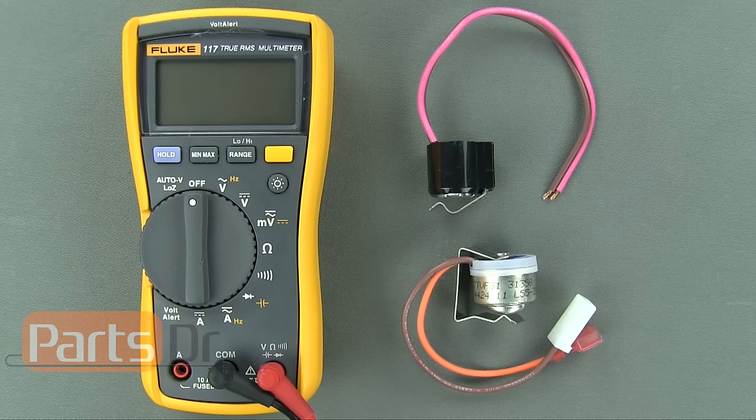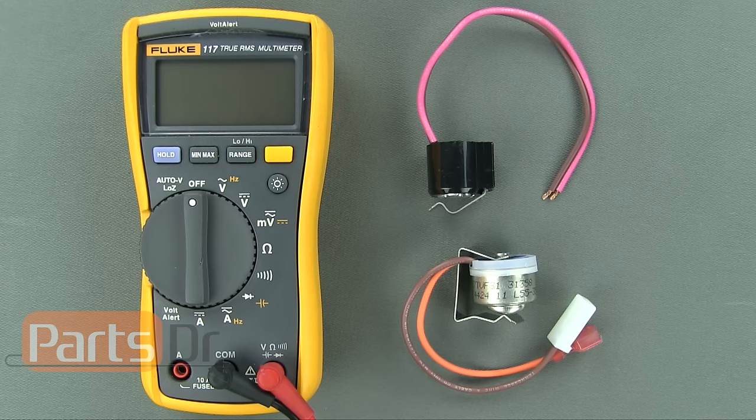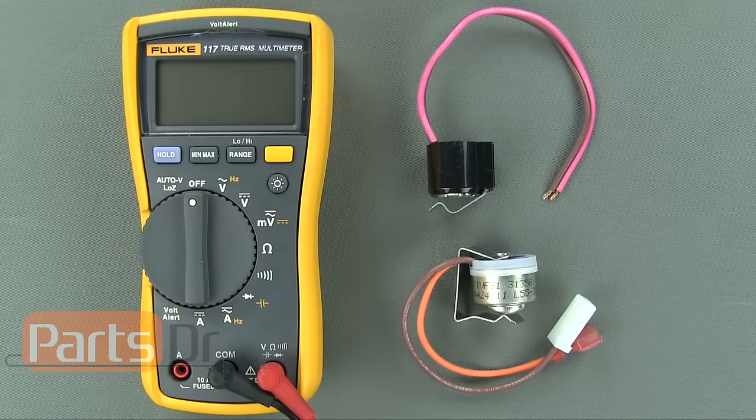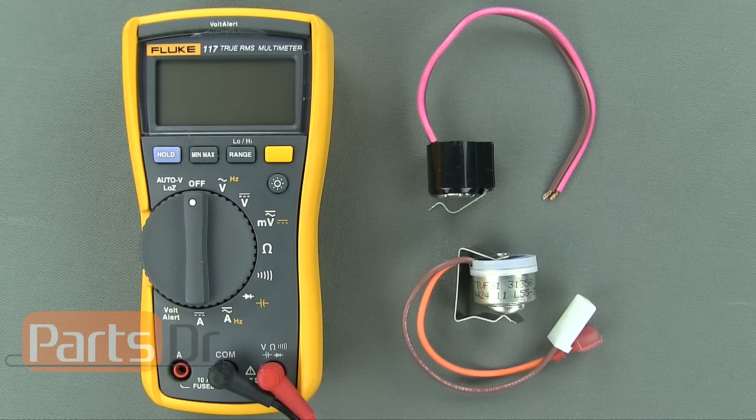If you take a look at the side of the defrost thermostat, you should see some letters and numbers that look like this: L 55 minus 35 F. The first number next to the L is the limit temperature that the thermostat opens up at. In this case, it is 55 degrees Fahrenheit.